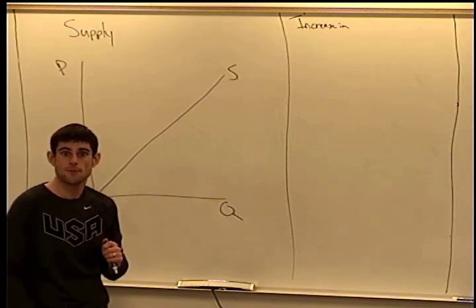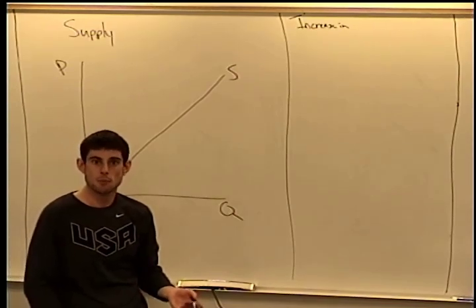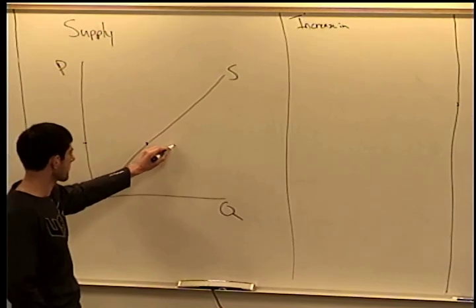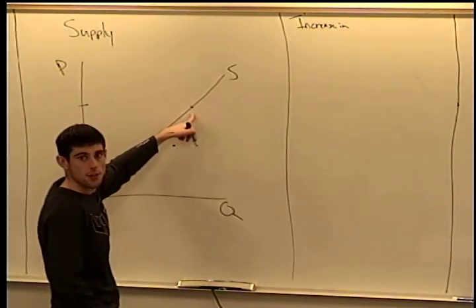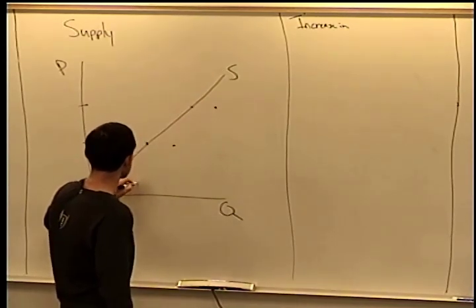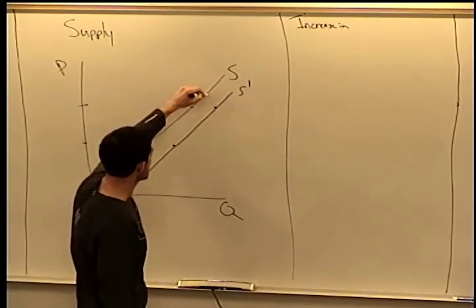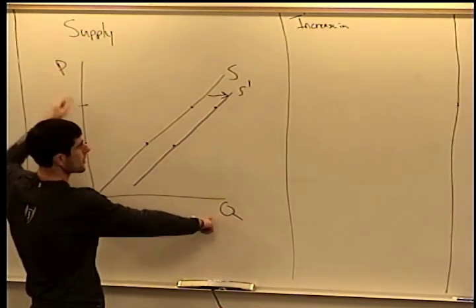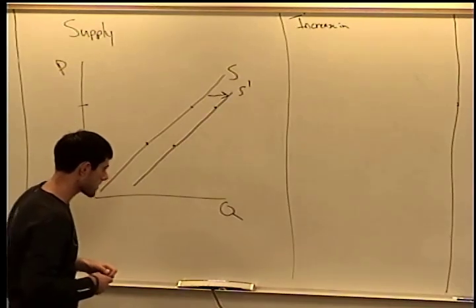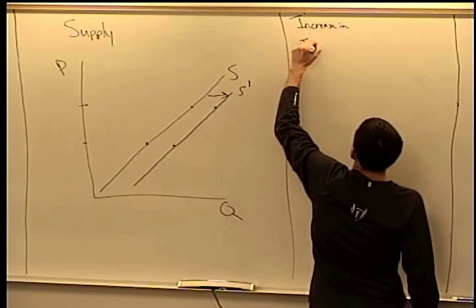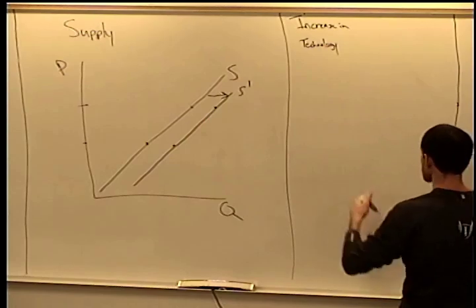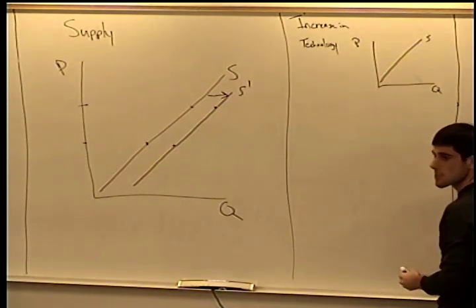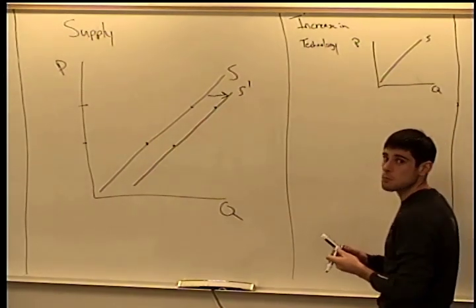Suppose there's a new oven that makes pizza twice as fast — in the same amount of time you can make twice as much pizza. Relatively, it costs less to make pizza than before. At any given price you'd be willing to make more pizza because it costs less. Overall, an increase in technology causes supply to increase — the supply curve shifts to the right. Price and quantity are the two variables on the graph; a change in a third variable shifts the curve.